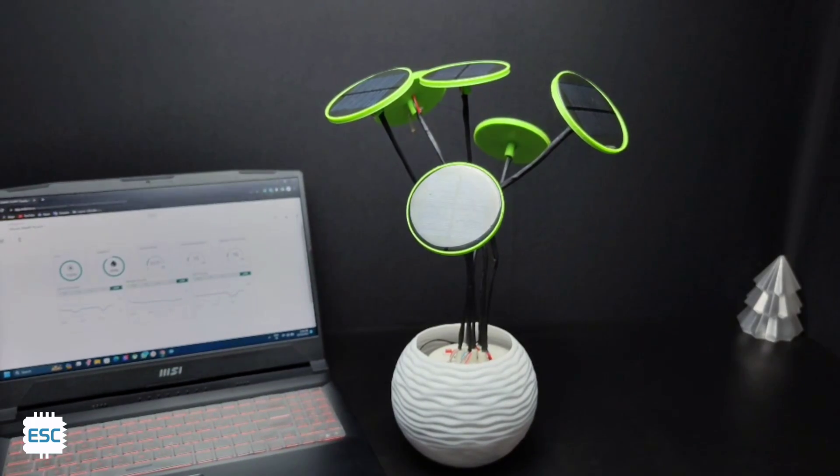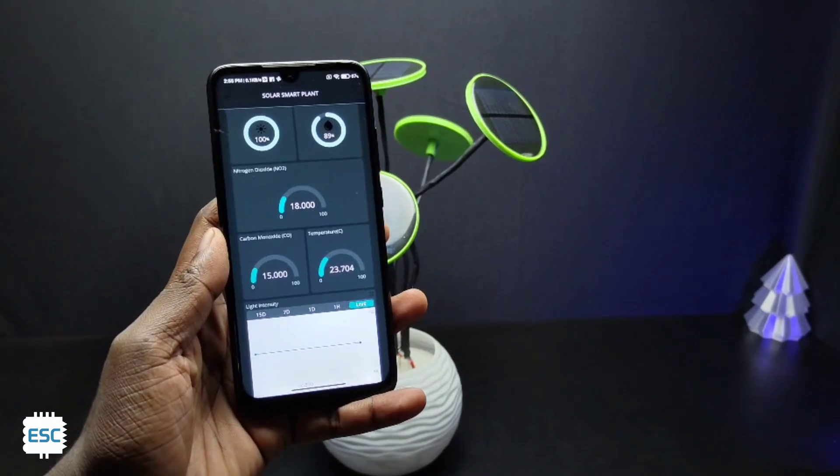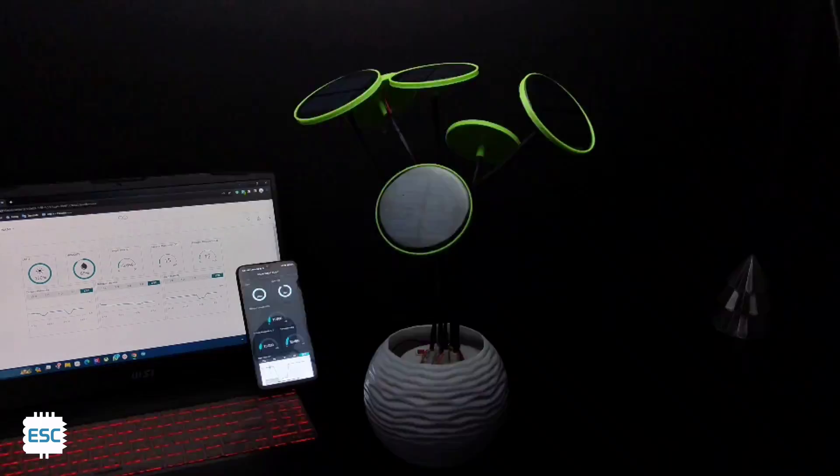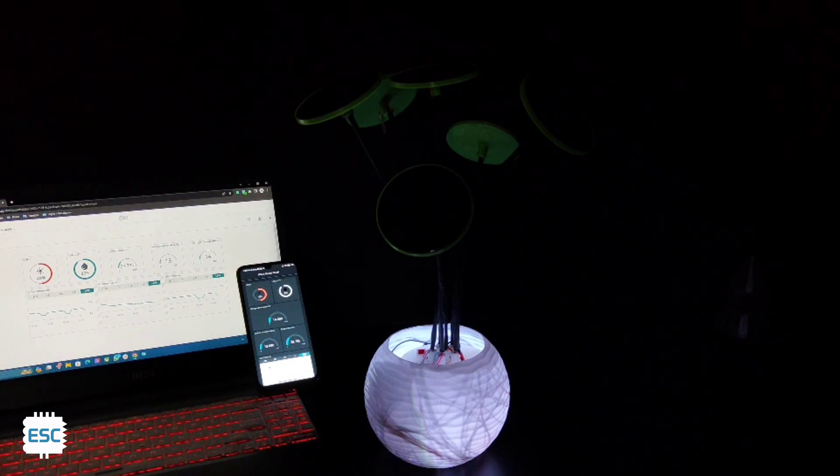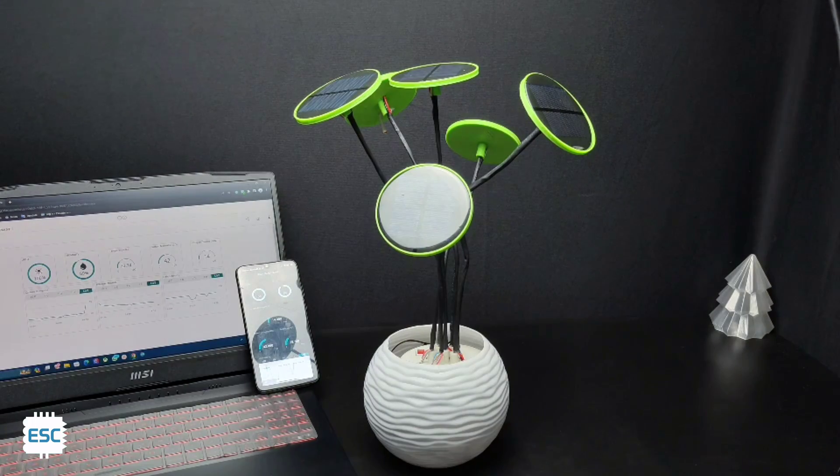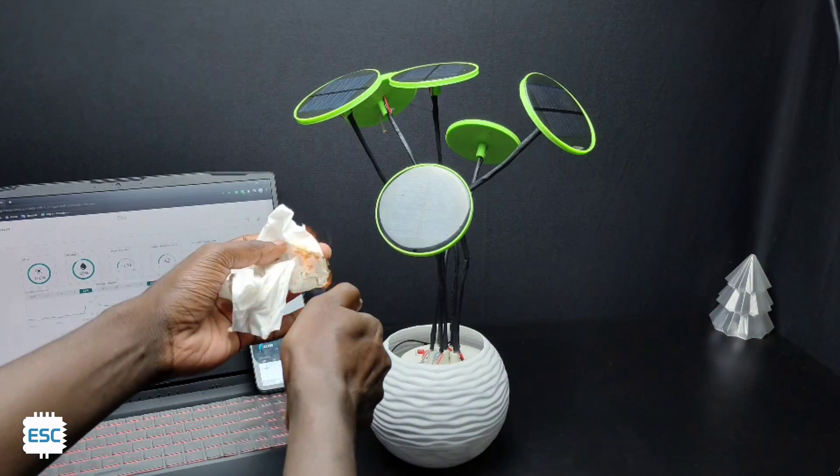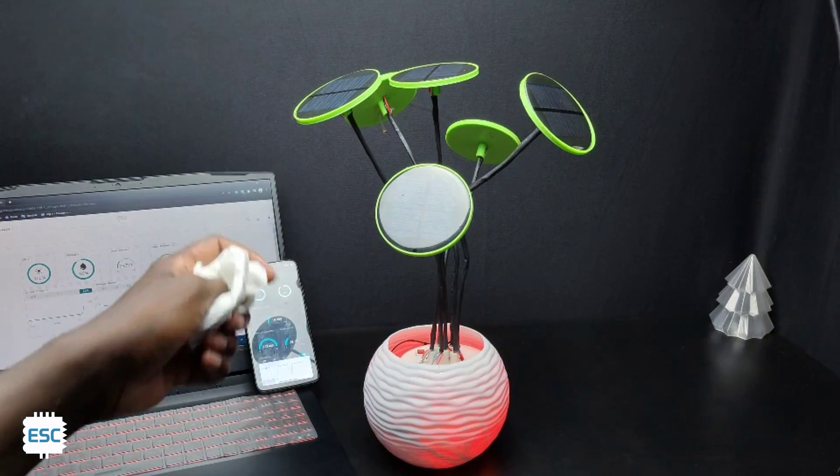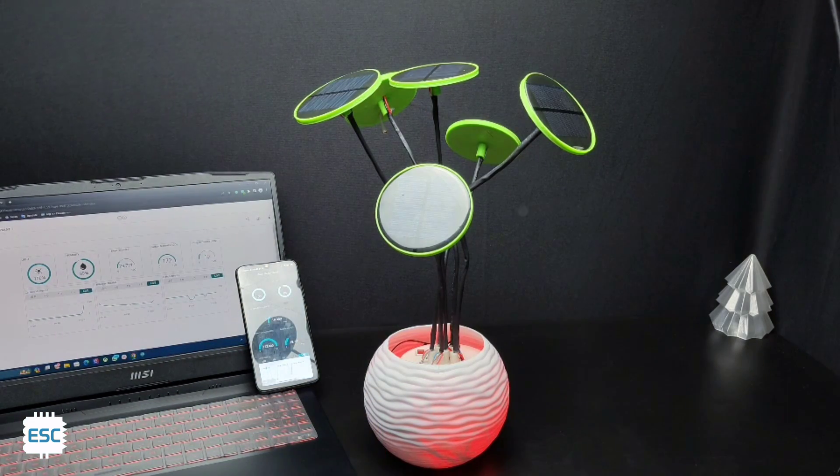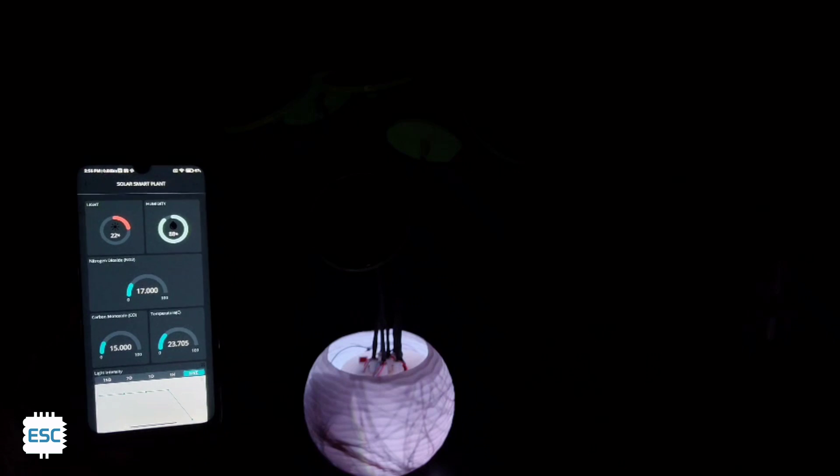So we can monitor these parameters through website and mobile application. The color of the pot changes to white at night. Also it turns to red if any of the parameters goes above the dangerous level. So with this plant we can monitor the environmental parameters and we can take precautions according to the conditions.